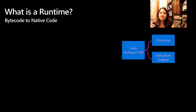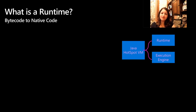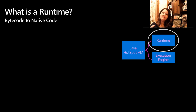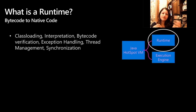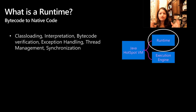Let's quickly dive into runtime. There's one goal for runtime: turning bytecode into native code. Many of you may know runtime as an interpreter, but it also performs various other functions such as class loading, synchronization, and thread management.